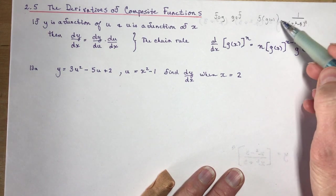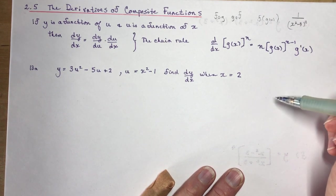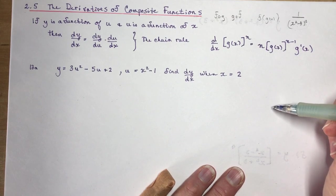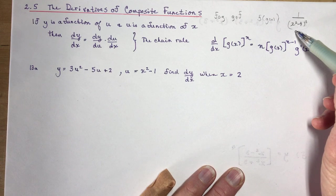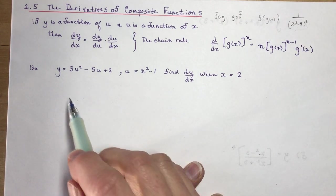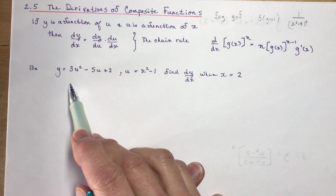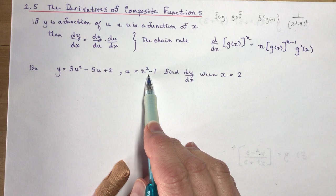So you might want to go back and review that section before you start this, or maybe you're quite familiar with it. So what we're looking at here now is a way to find the derivative of a composite function without expanding it. So I'm going to show you a question from your textbook 13a, where they give the y in terms of u and u in terms of x.